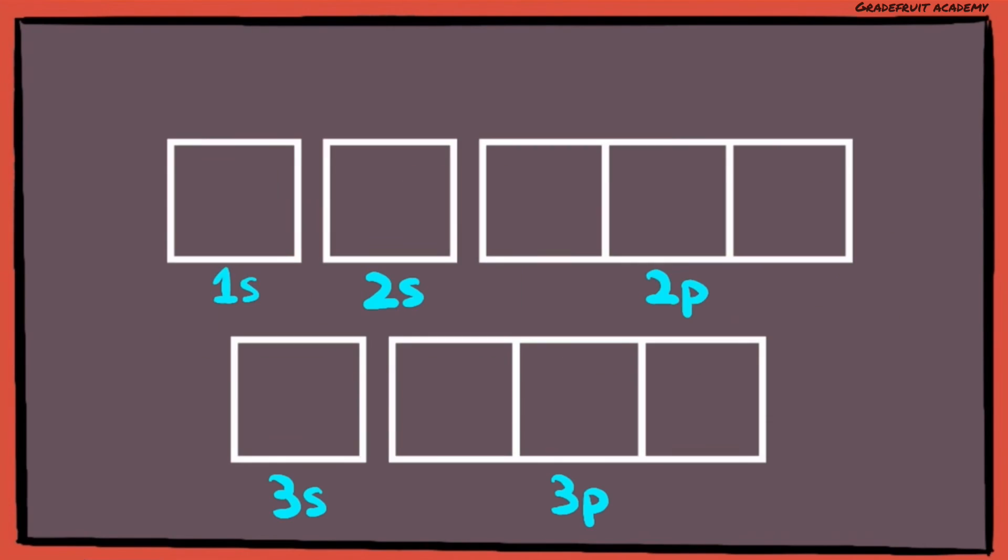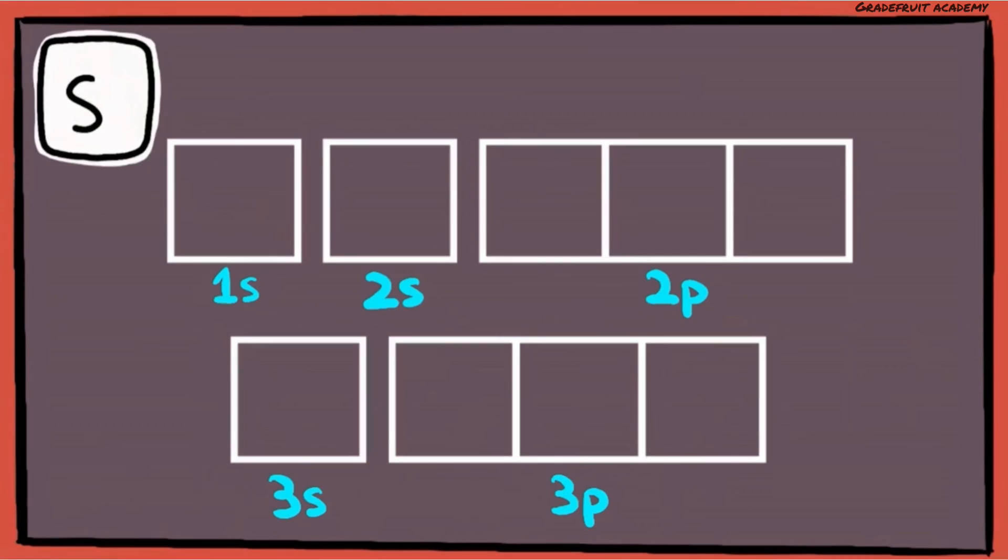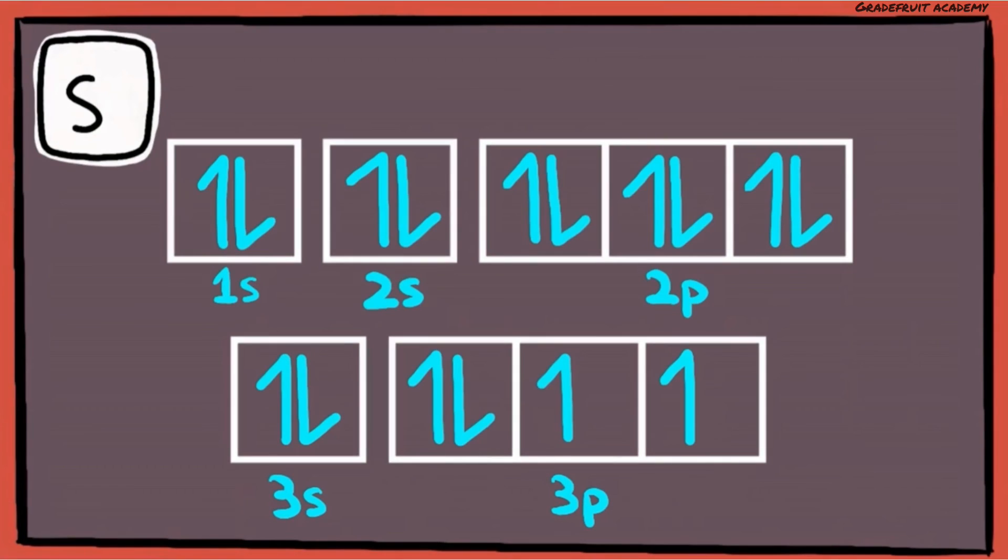For anions, filling up the electron-in-box diagram is just the same as how we will fill up for a normal atom, by adding to the next available orbital. In the case of sulfur, same thing, let's first fill in the diagram for a normal sulfur atom.